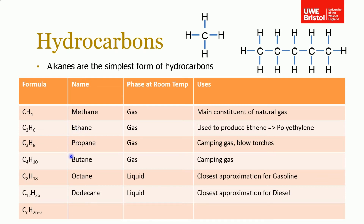Going through the series: methane, ethane, propane, butane are all gases used for various processes — natural gas, blowtorches, camping, and making polyethylene and polystyrene. As the chain grows longer, the substance changes from a gas to a liquid. C8H18 is octane, the closest approximation for gasoline, which is relevant to this module. C12H26 is dodecane, the closest approximation for diesel. All alkanes are generalized by the formula CnH(2n+2).